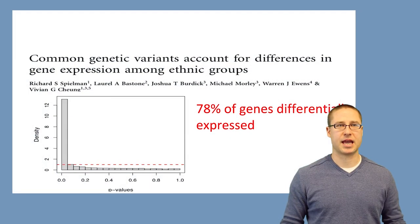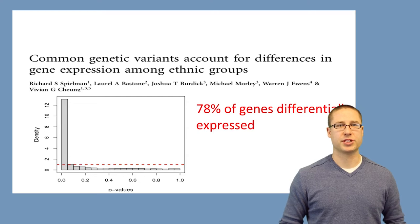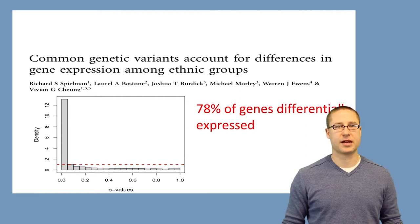This is actually a very common problem in genomics, and the most common confounder — the one that trips up the most people — is what's called batch effects. Here's an example: a paper that was recently published looked for differences in gene expression between ethnic groups, and identified that 78% of genes were differentially expressed between the two ethnic groups.